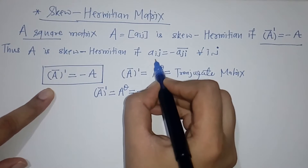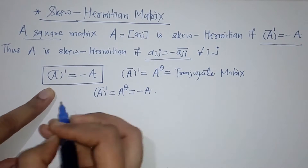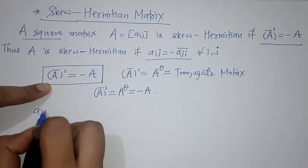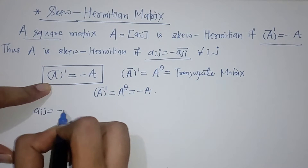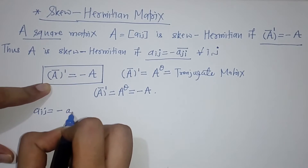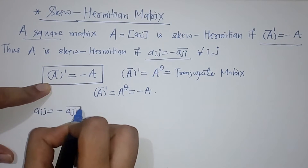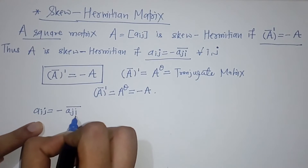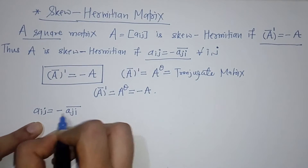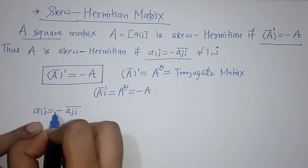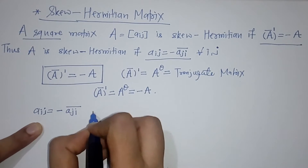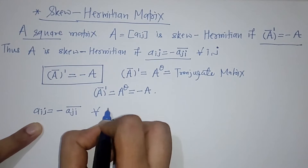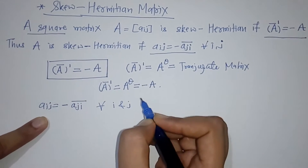Next, we have the element-wise condition: Aij equals minus of Aji-bar, meaning Aij and Aji are the negative conjugates of each other. This holds for all i and j.